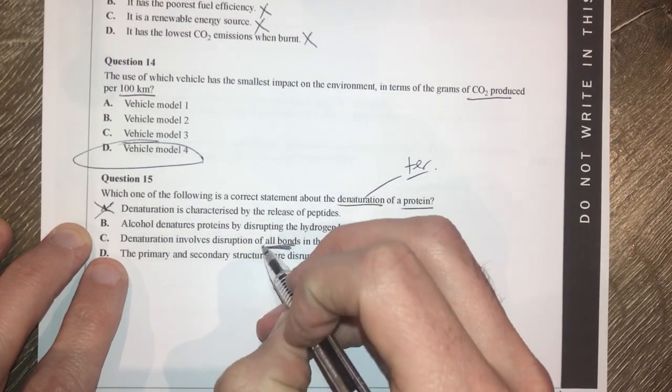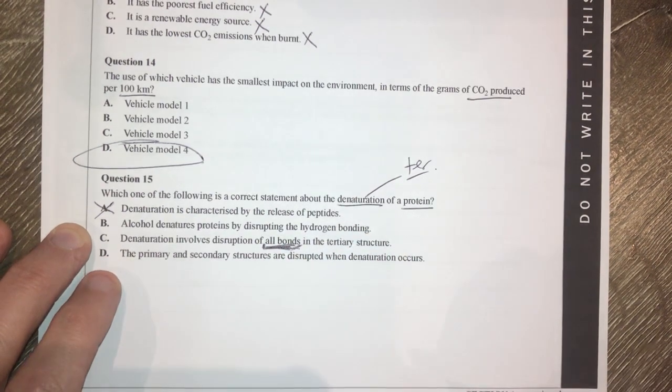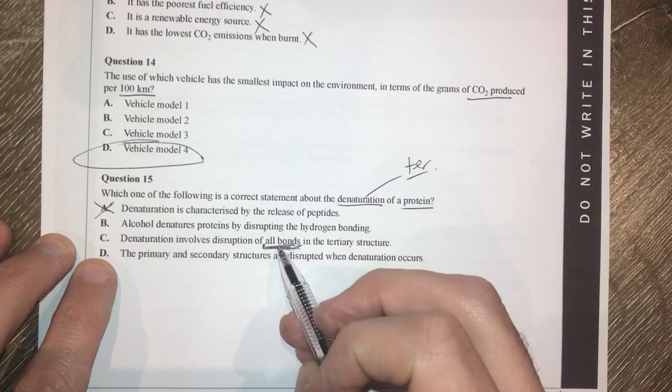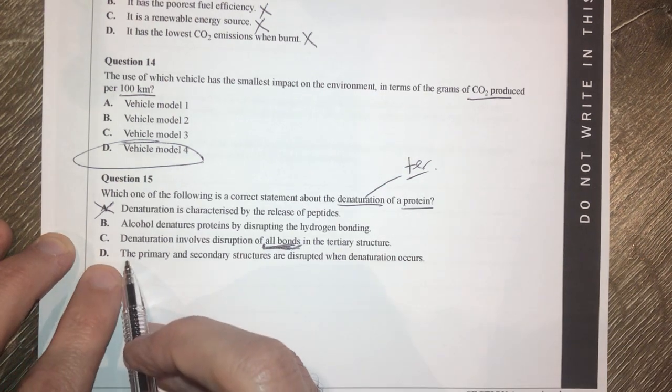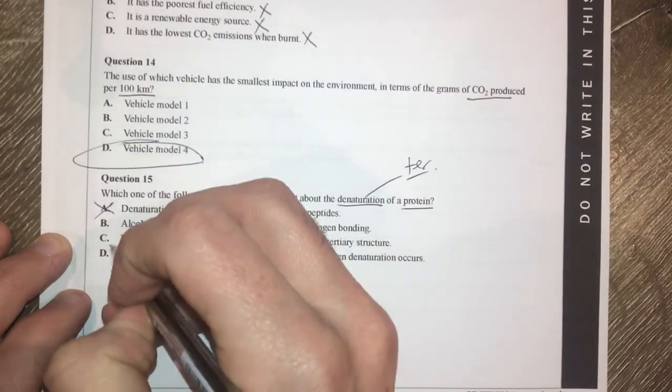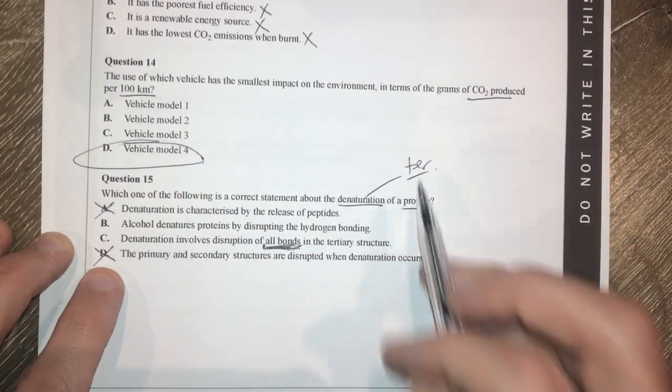Denaturation involves the disruption of all bonds in the tertiary structure. Every time we see all written in a multiple choice question, it makes me question it. I don't think it's going to disrupt all bonds, but let's have a look at the next one. The primary and secondary structures are disrupted when denaturation occurs. That is definitely not right.